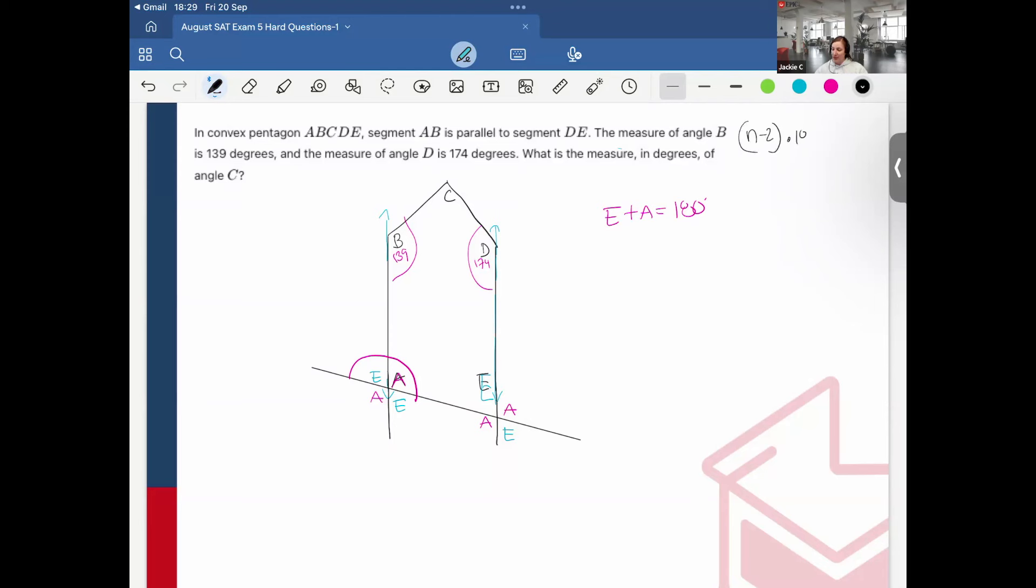To get the interior angles of a pentagon I can do n minus 2 for the amount of sides of the polygon times 180. That's 5 minus 2 times 180. 3 times 180, the total interior angles of the pentagon sum to 540 degrees. I would put a plus b plus c plus d plus e equals 540. I know a and e are 180 degrees. I have angle b 139 plus angle d 174 plus c equals 540. So 493 plus c equals 540. Subtract out 493 from each side and I get that c equals 47.